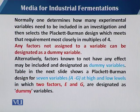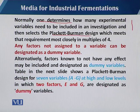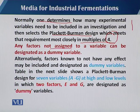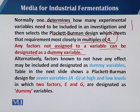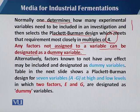Normally, one first determines how many experimental variables need to be included in any investigation, then selects the Plackett-Burman design which meets the requirement most closely to the multiple of 4. Any factors not assigned to any variables should be designated as dummy variables.